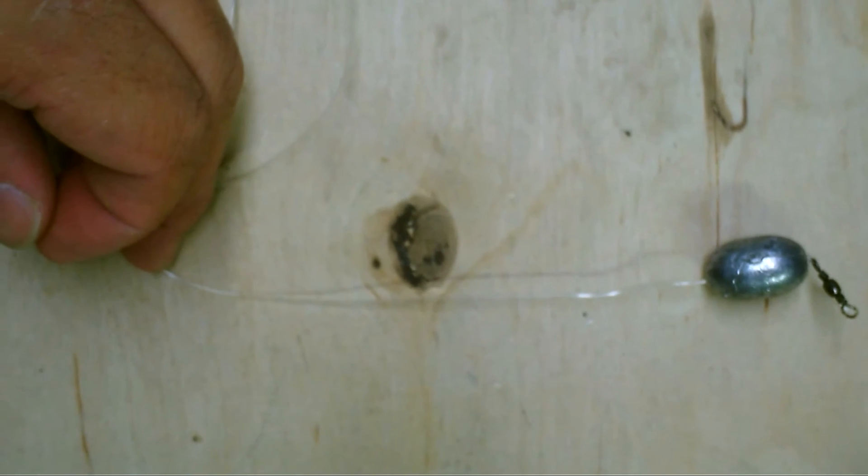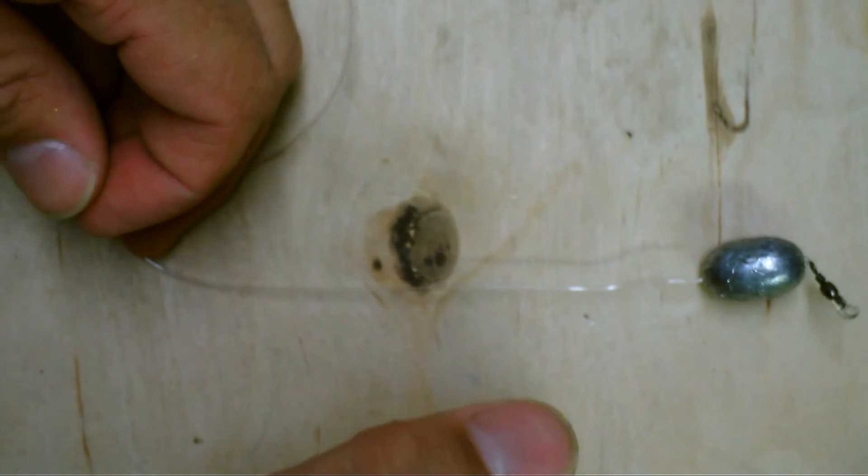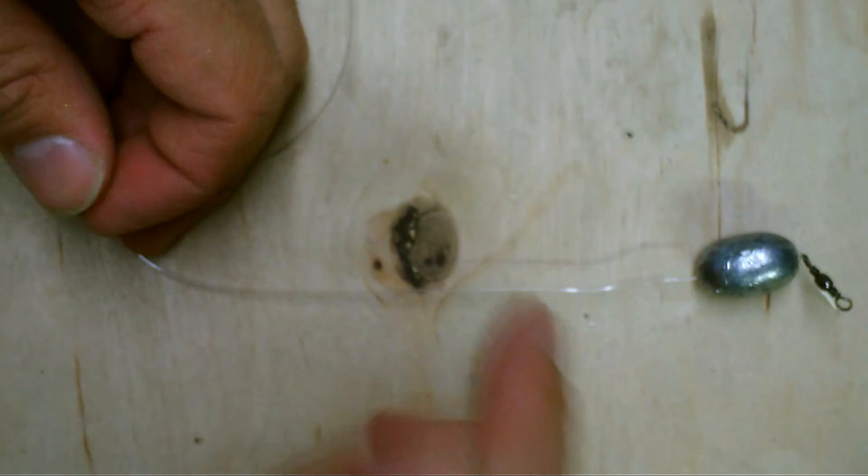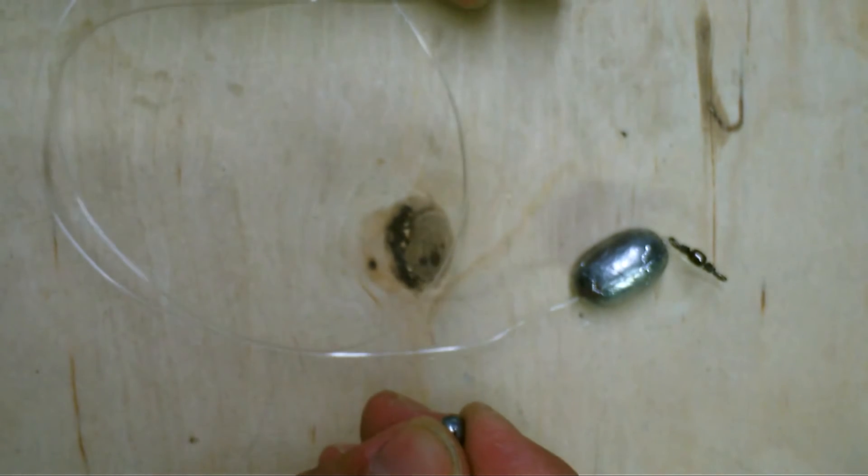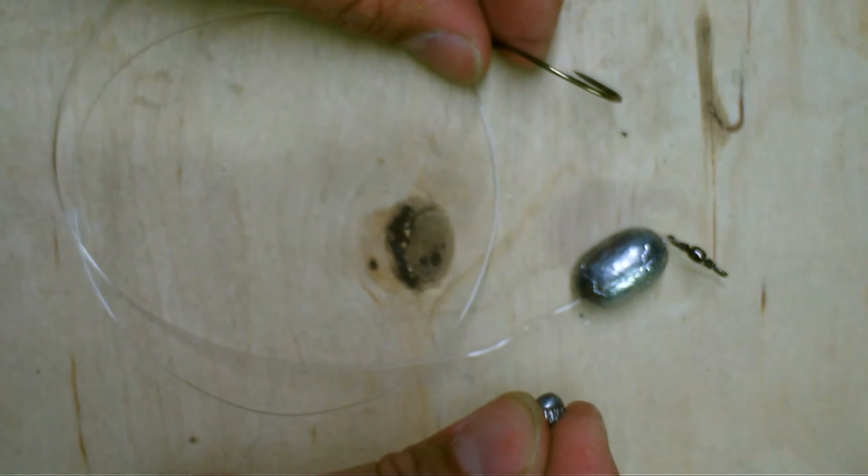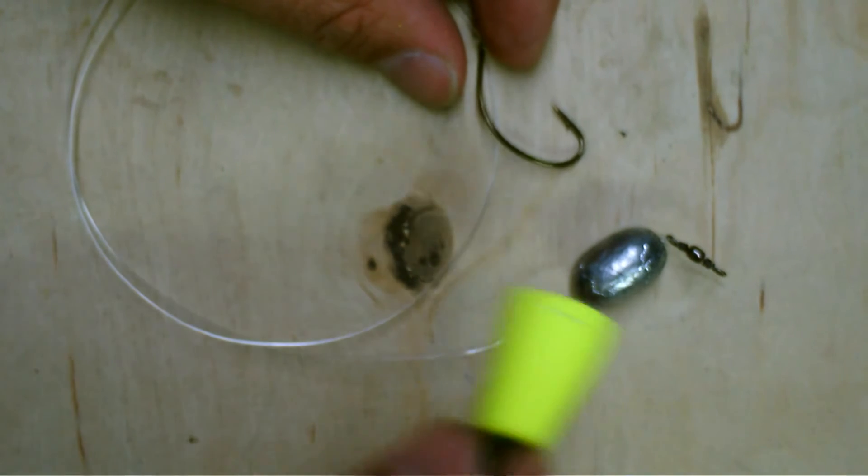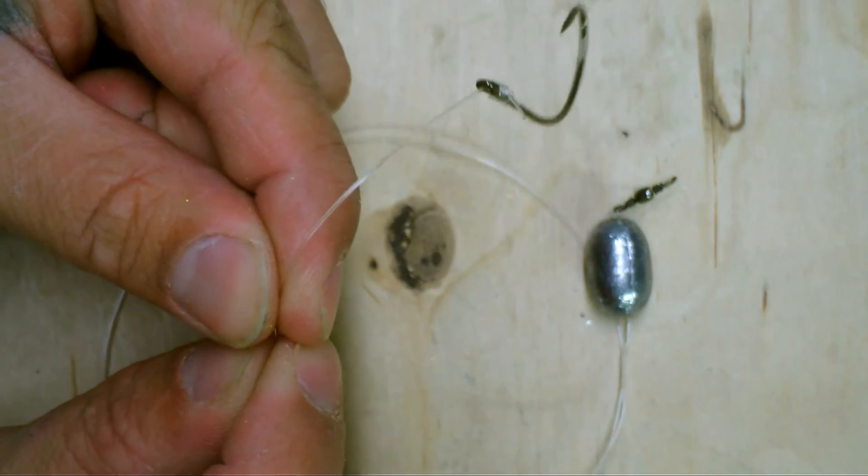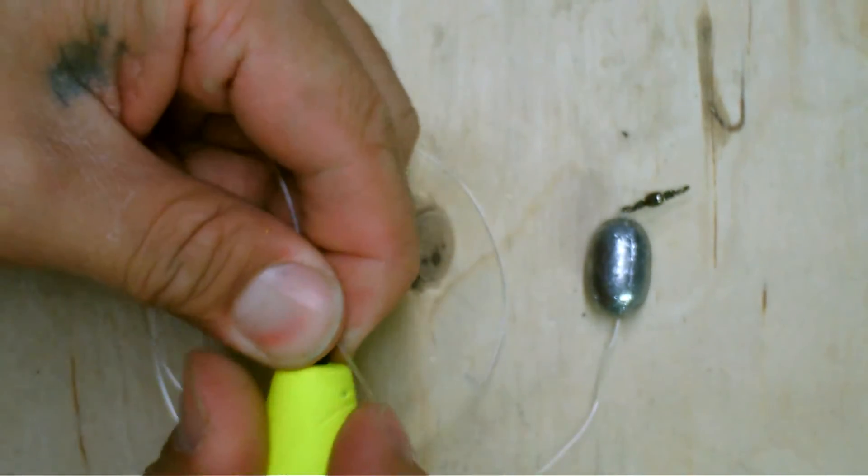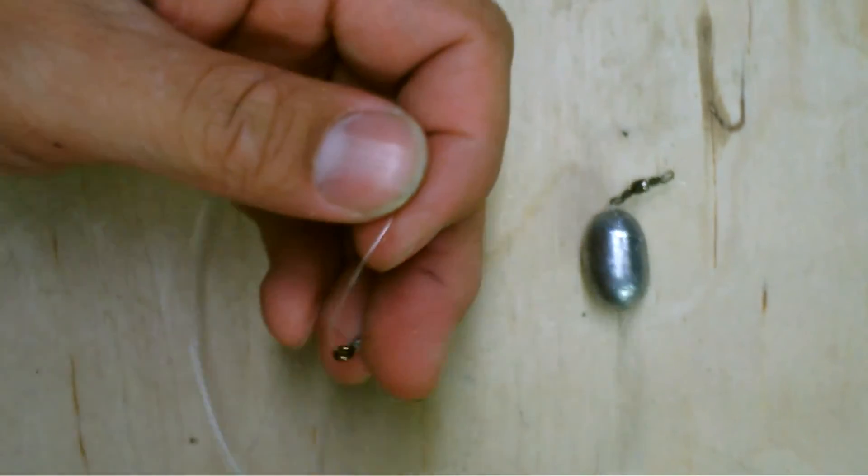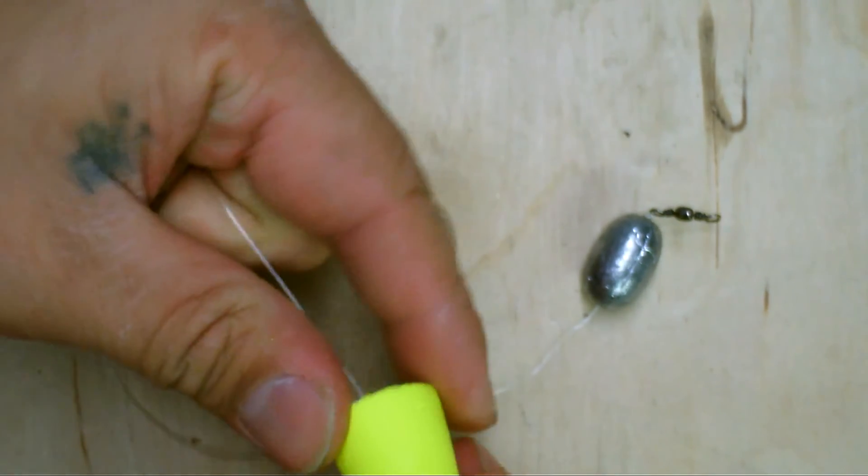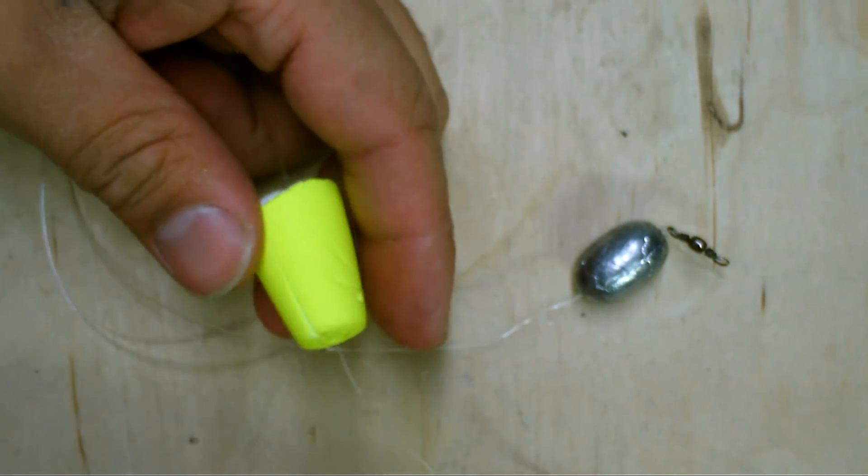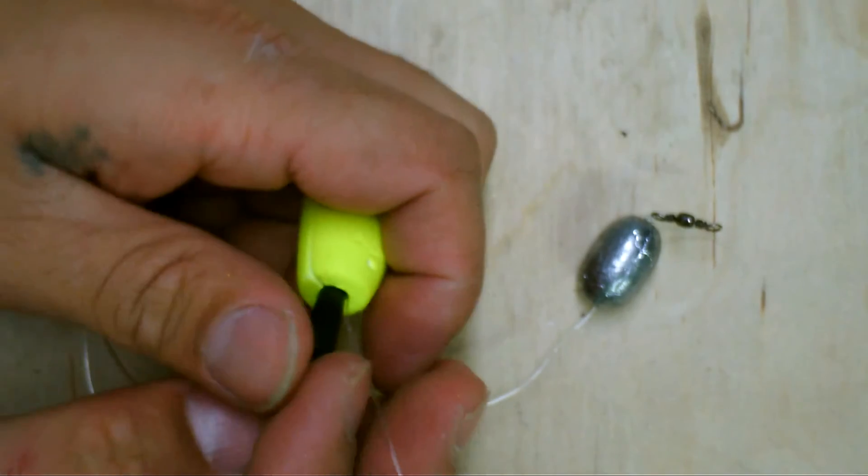For the fish finder rig, we're going to change the length of the leader to about three or four feet, and we're going to use the same setup here. However, we're going to omit this pea weight, but we're going to add a cork. Now we're going to go maybe two inches or so off of the hook and we're going to add the cork. The cork needs to be strong enough or big enough to be buoyant enough to hold whatever bait you're using. So you're also going to have to make sure that your cork can float the bait. And that's why this is called a fish finder rig.